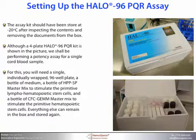Although a four-plate Halo 96PQR kit is shown in the picture, we should be performing a potency assay for a single cord blood sample. For this you will need a single individually wrapped 96-well plate, a bottle of medium, a bottle of the HPP-SP master mix, and a bottle of the CFC-GEMM master mix. Everything else can remain in the box and stored again.